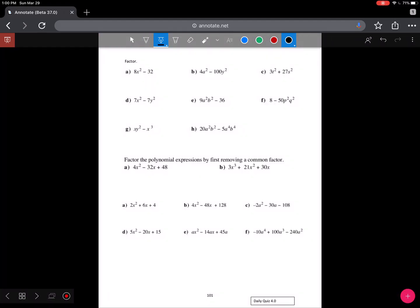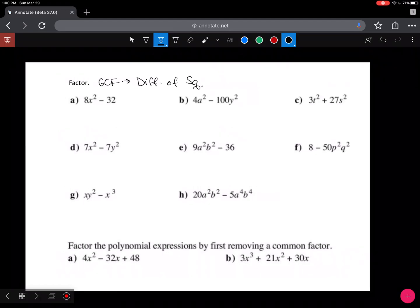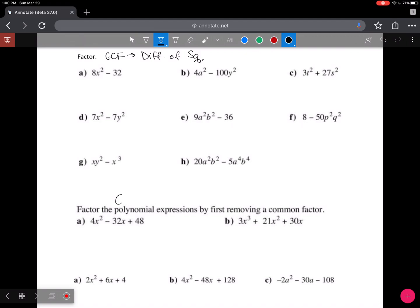On the next page here, the last page of this lesson, what you can see here is just the combination of GCF and difference of squares. That's the first section, so GCF then difference of squares. For the next question underneath here it's going to be GCF and then trinomial, simple trinomial factor.